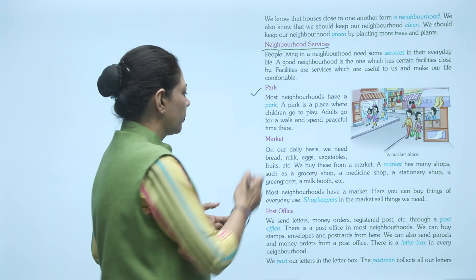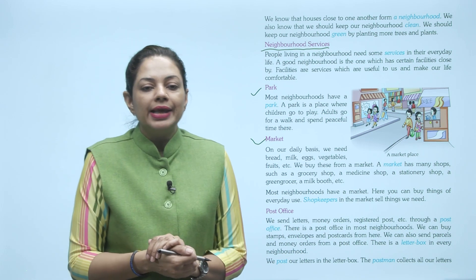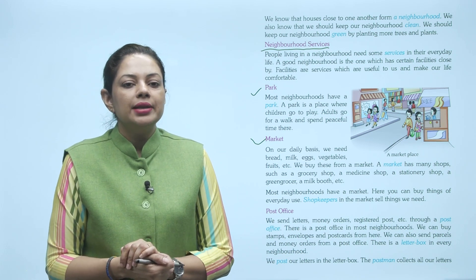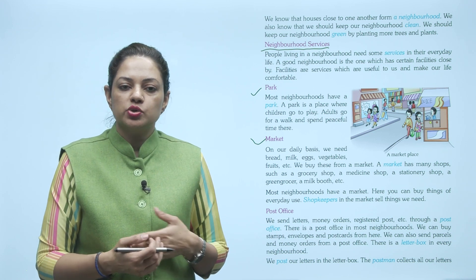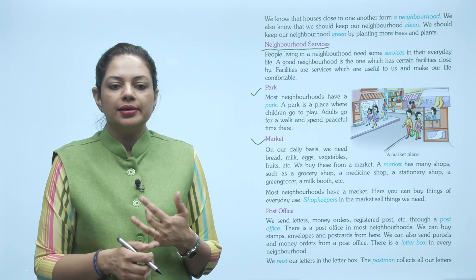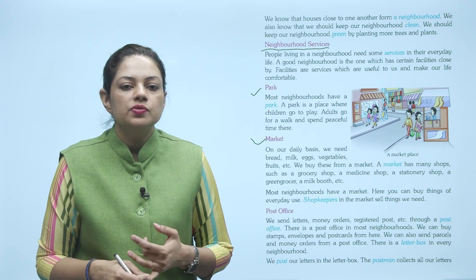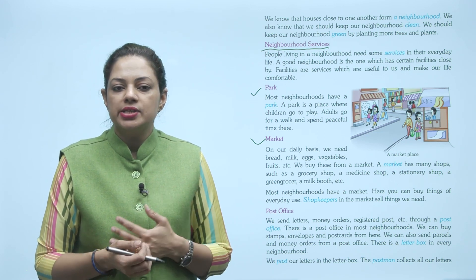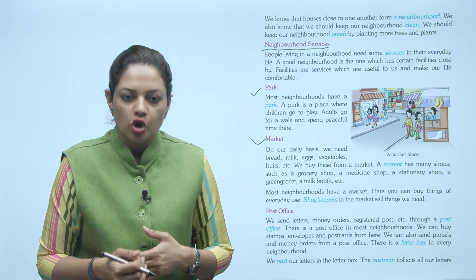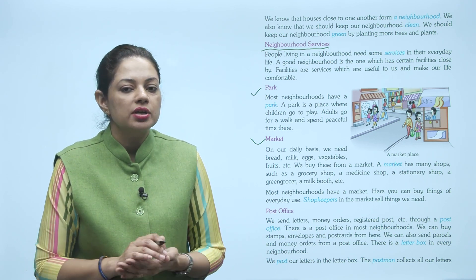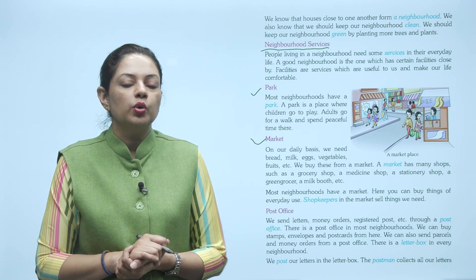Second hai market. On a daily basis we need bread, milk, eggs, vegetables, fruits, etc. Daily hamein rozana in cheezon ki zaroorat hoti hai. We buy these from a market. A market has many shops such as grocery shop, a medicine shop, a stationary shop, a green grocer, a milk booth, etc.